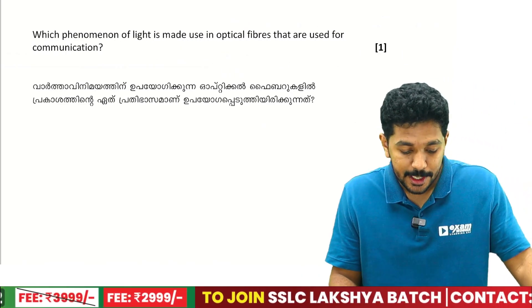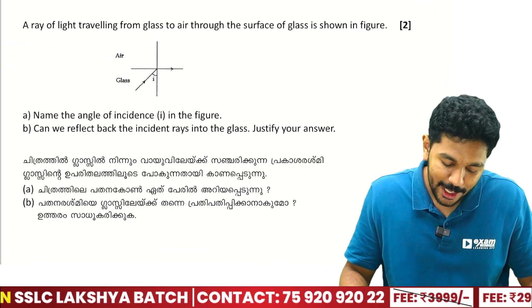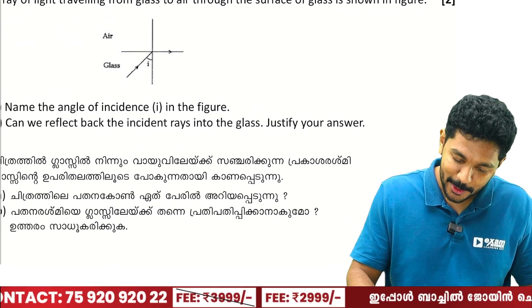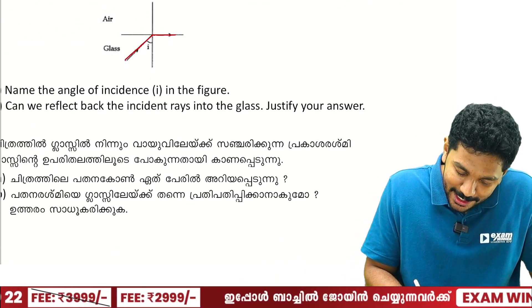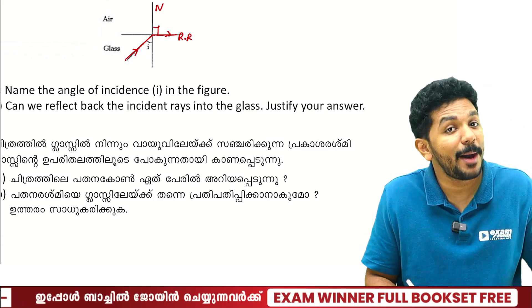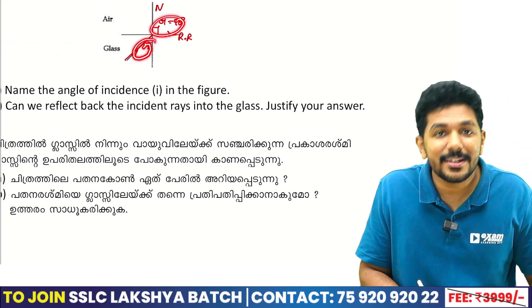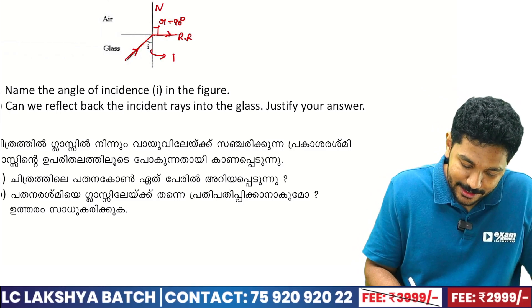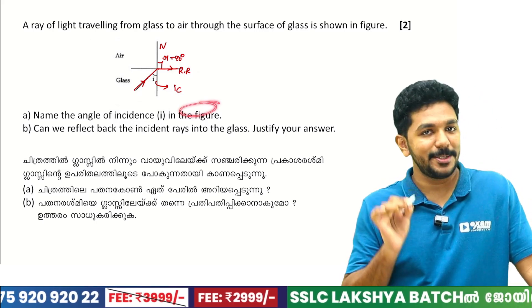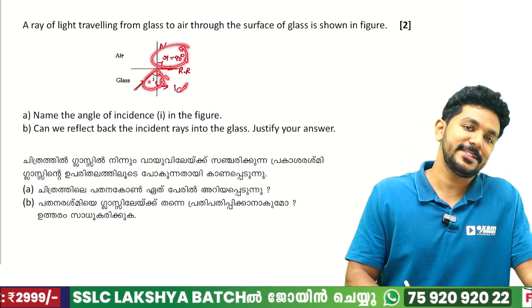Which phenomenon of light is used in optical fibers? In optical fibers, we have total internal reflection. A ray of light traveling from glass to air: the angle of incidence at which the refracted ray travels along the surface — that angle is called the critical angle. At the critical angle, the angle of refraction is 90 degrees.